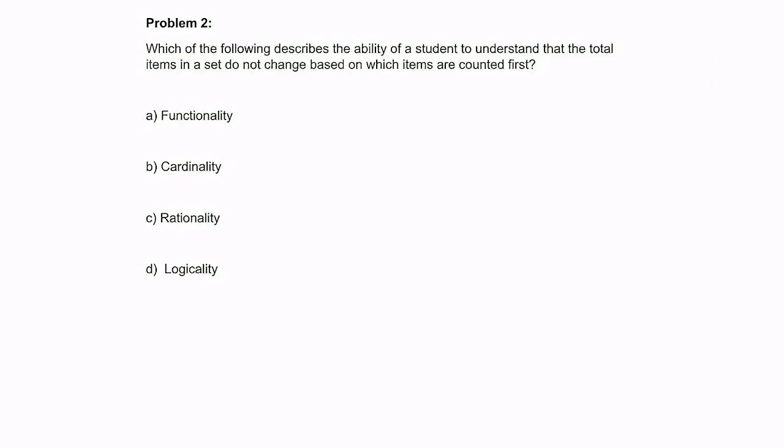Problem 2: Which of the following describes the ability of a student to understand that the total items in a set do not change based on which items are counted first? Now, a great thing to do with problems like this is just to quickly read through the options they give you to see what sounds familiar or not. A, functionality. You see the root word function and that makes me think of something working or not working. B, cardinality. See that root word cardinal. That makes me think of a cardinal number since we're dealing with counting here in this problem. And I have heard that term in a math class before, so that might be a possibility.